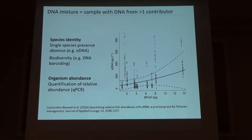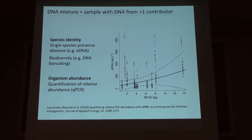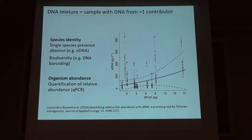So what is a DNA mixture? DNA ultimately sources from specimens, but mixtures of DNA from multiple specimens are really ubiquitous in the environment. We take advantage of DNA mixtures already in genetics, at least indirectly. When we're doing eDNA sampling, often we're getting multiple individuals in that sample. There has been a lot of interest recently in taking eDNA and trying to infer abundance from it.